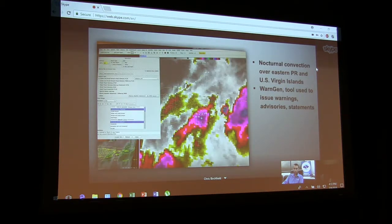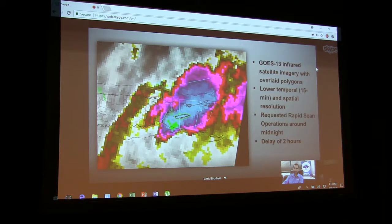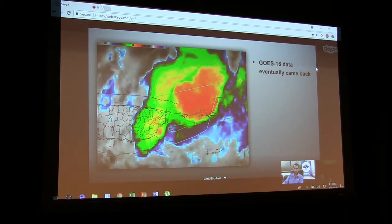Here's a picture of one of the active nights. We had a lot of nocturnal convection over the eastern half of Puerto Rico. Here's a picture of WarnGen, which we used to issue warnings, advisories, and statements for those areas. It became very active this night. Unfortunately, GOES-16 data was out right in the middle of this event on an overnight shift, and I was using GOES-13 infrared satellite data to issue warnings with 15-minute scans. So four images per hour issuing warnings for the people living here. In Vieques here, I had a flash flood warning out, and so obviously very critical that we have the best data available. Unfortunately, I requested a rapid scan operations, which would allow us at least to get faster scans for our area, but there was a delay as there was maintenance being done on the satellite. But eventually, GOES-16 data did eventually come back in late in the night, pretty much after the event was winding down.